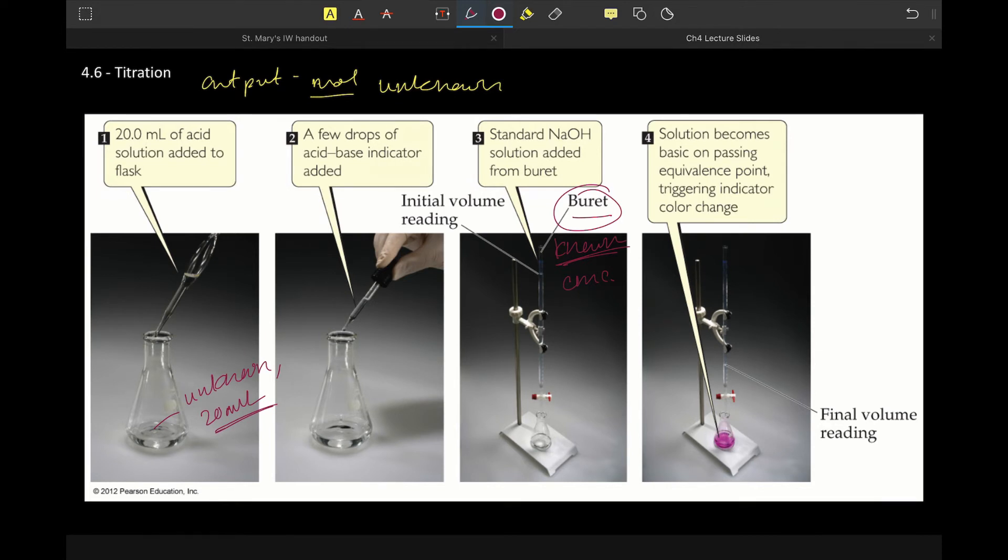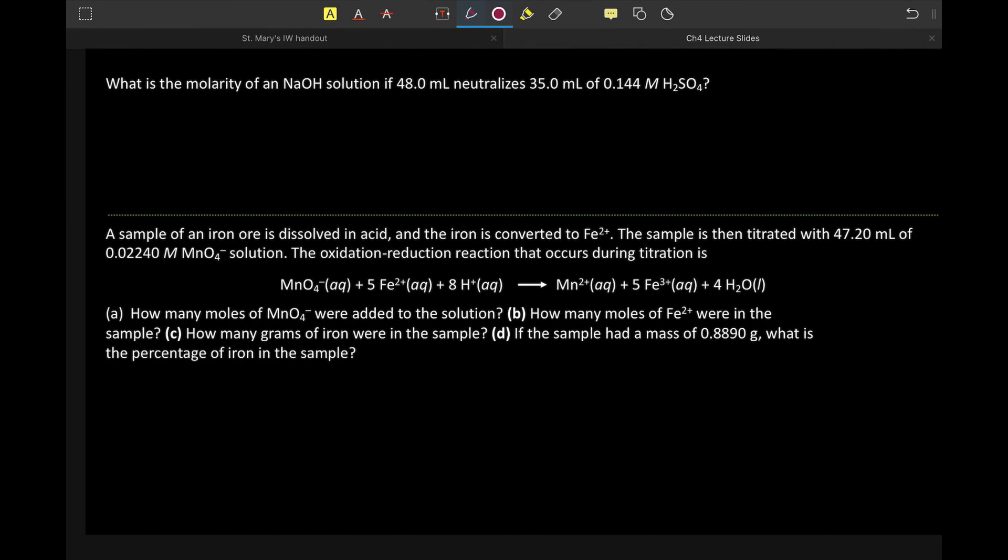But anyway, we have our known, so we will know the concentration, we will know the volume, which means we can solve for moles of our known, which then we can use a mole ratio to then get to moles of unknown. And then what we do with that moles of unknown depends on what the goal is. We could take that moles of unknown and divide it by its initial volume to come up with molarity. Or if we had a solid unknown that we started with and we figured out moles of unknown, we could use grams of unknown divided by moles of unknown to come up with the molar mass of that unknown. So it just depends on what the goal is. But the output information of a titration experiment is always your moles of unknown, based on the concentration and volume of your known, which gives you the moles of your known, which then via mole ratio will take you to moles of unknown.